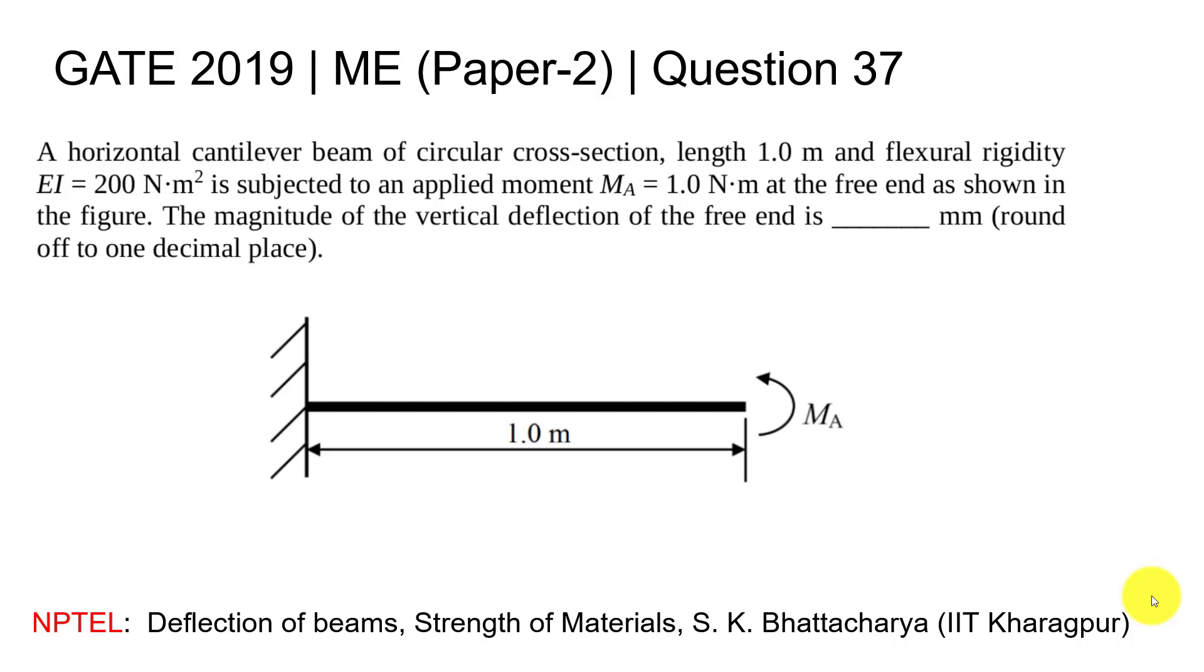Hello all, today let's see a question from GATE 2019 Mechanical Paper 2, Question Number 37. A horizontal cantilever beam of circular cross-section, length 1 meter, and flexural rigidity EI equal to 200 Newton meter squared is subjected to an applied moment MA equal to 1 Newton meter at the free end as shown in the figure.